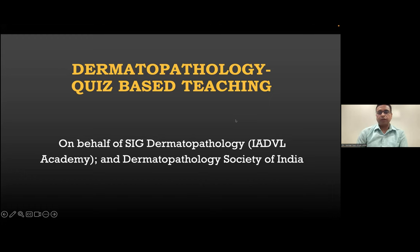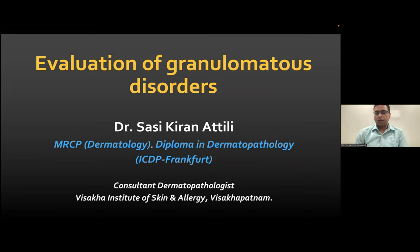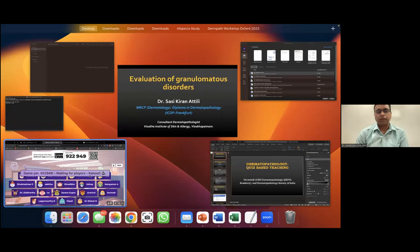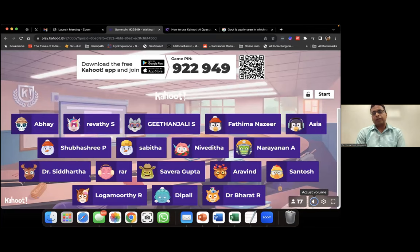The session today is on evaluation of granulomatous disorders. For those who joined late due to technical issues, the Kahoot game pin is 922949. This is an interactive quiz-based teaching session. We'll give some time for participants to log in. Today's quiz will have about 19 questions.